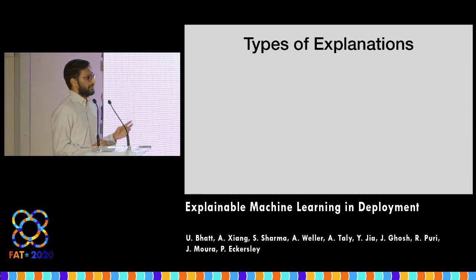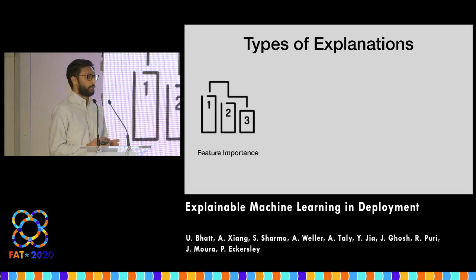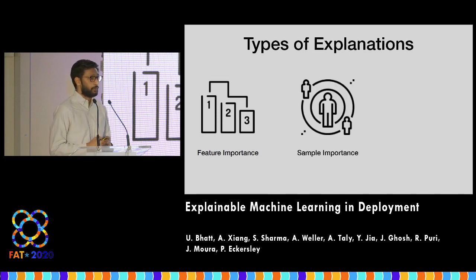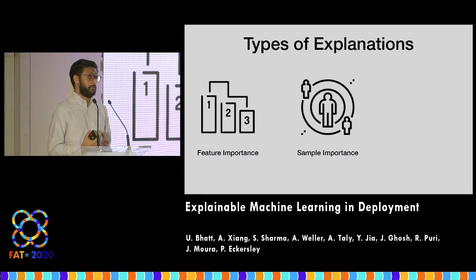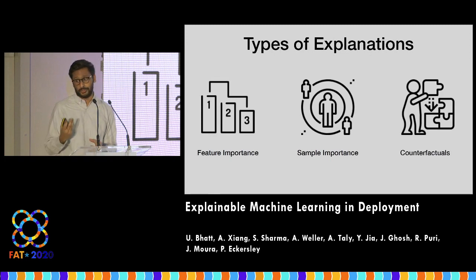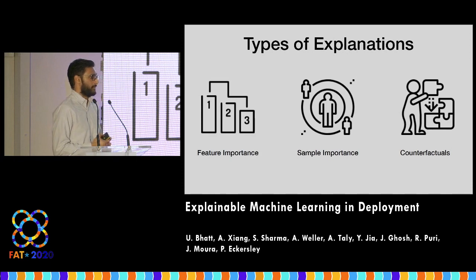We found three types of explanation techniques popular amongst the organizations we interviewed. Feature importance explanations — providing attribution for which feature was most important for a given input sample. Sample importance, which has become very popular — answering which training data point was most important for a given new test point. And the third, counterfactual explanations, which asks: what do you need to change about a given input in order to change the predicted outcome?